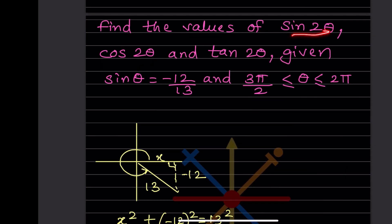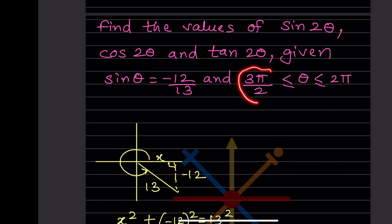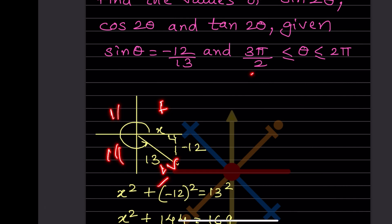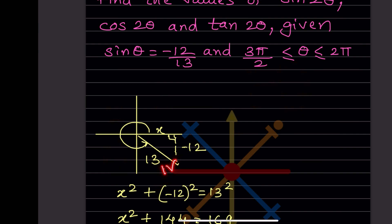Next: find sin2θ, cos2θ, and tan2θ given sinθ = -12/13, with 3π/2 ≤ θ < 2π. Converting: 3π/2 = 270° and 2π = 360°, so θ lies in the fourth quadrant.